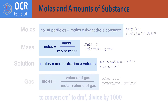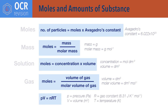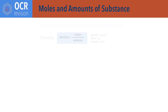Moles of gas equals volume divided by molar volume. PV equals nRT. This is the ideal gas equation, where P equals pressure in pascals, V equals volume in metres cubed, n equals number of moles, R is the universal gas constant — 8.31 joules per kelvin per mole — and T is temperature in kelvin.